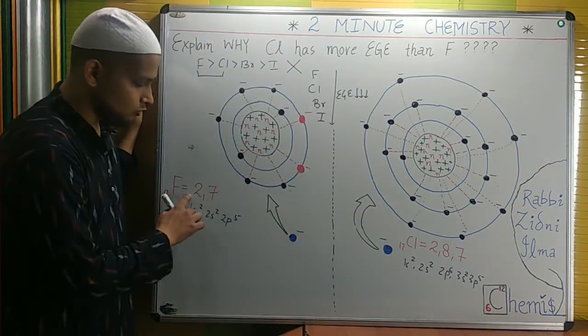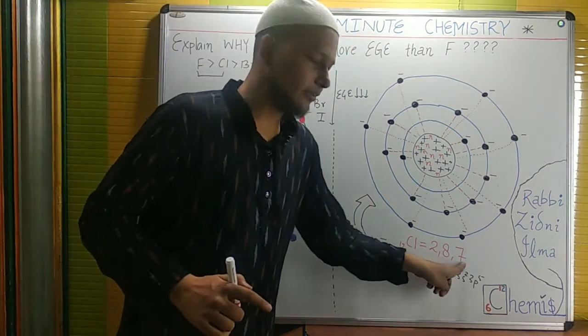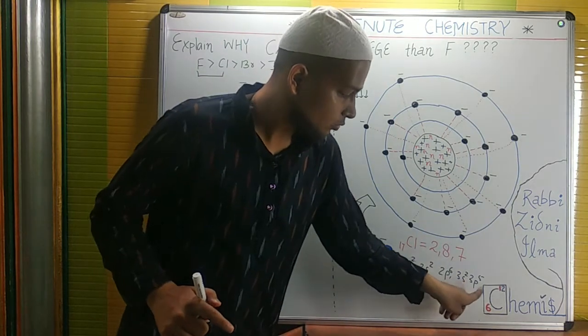So fluorine: atomic number 9, electron configuration 2,7 or 1s² 2s² 2p⁵. Chlorine: atomic number 17, configuration 2,8,7 or 1s² 2s² 2p⁶ 3s² 3p⁵.